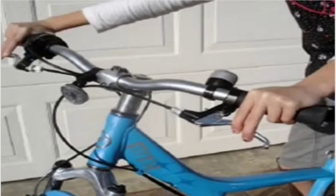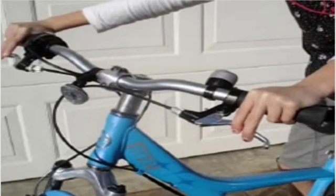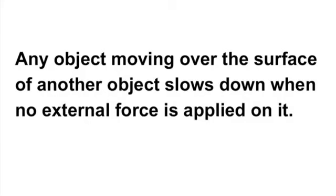You might have seen a driver of a car or a truck slowing down the vehicle at a traffic signal. And you also slow down your bicycle whenever needed by applying brakes. Have you ever thought why a vehicle slows down when brakes are applied? Any object moving over the surface of another object slows down when no external force is applied on it.